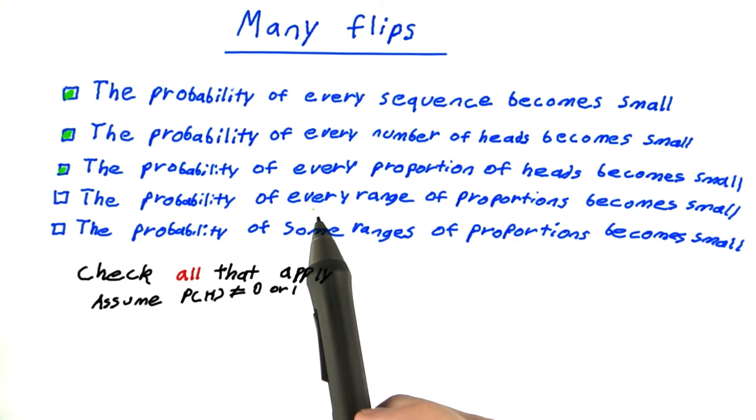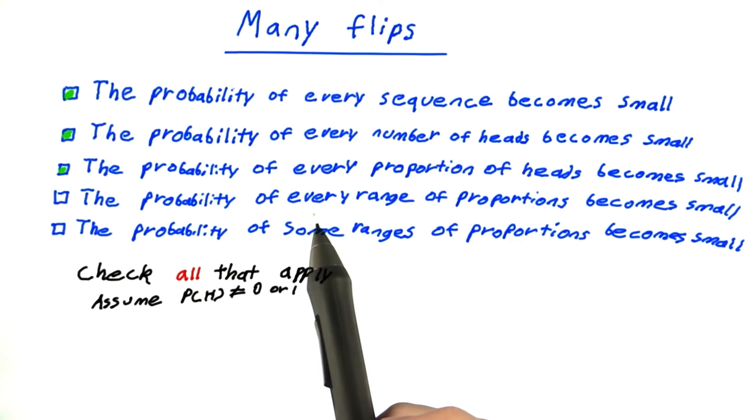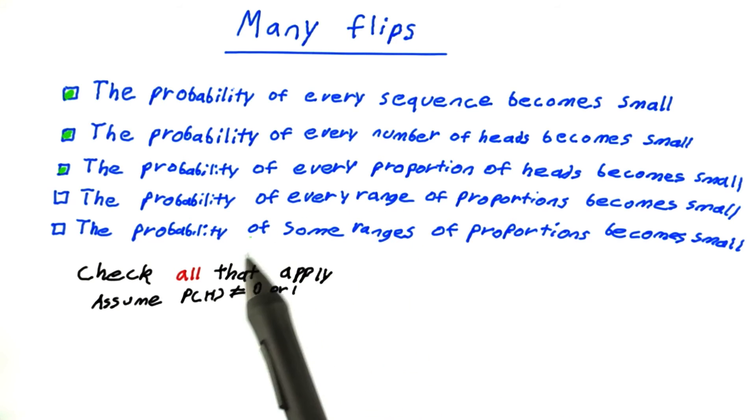Now this statement is not true. The probability of every range of proportions can't become small. The range of all proportions is a range, and we know that has to stay at one, so that can't be true.